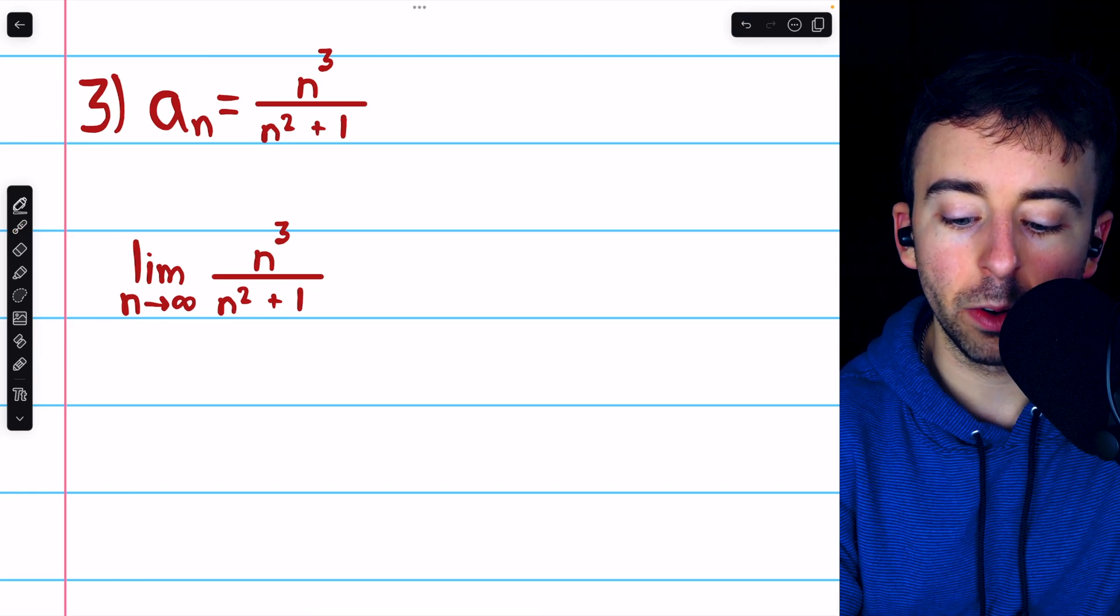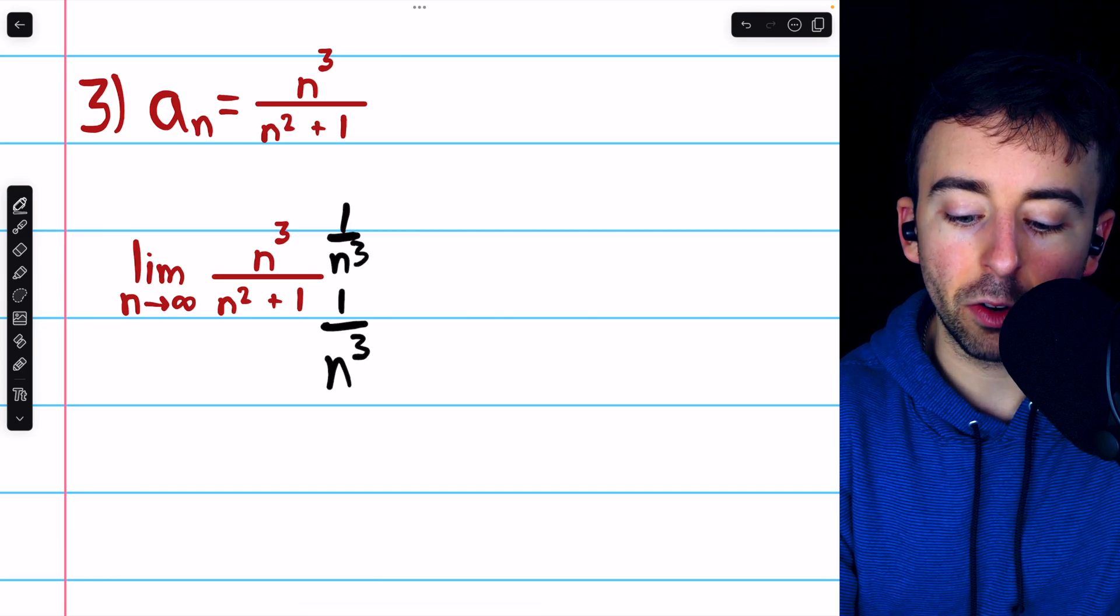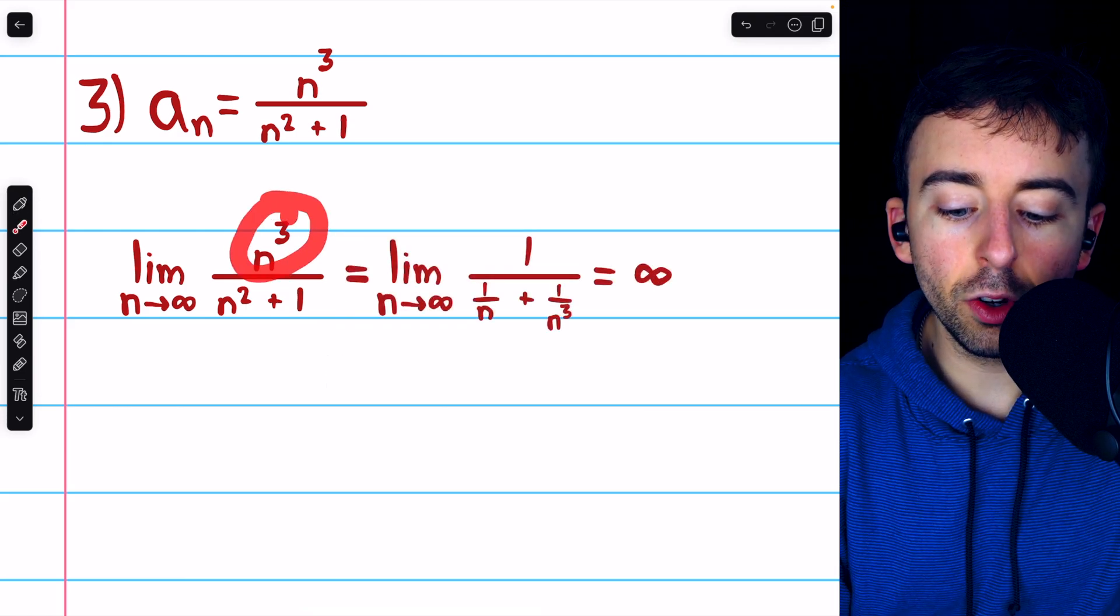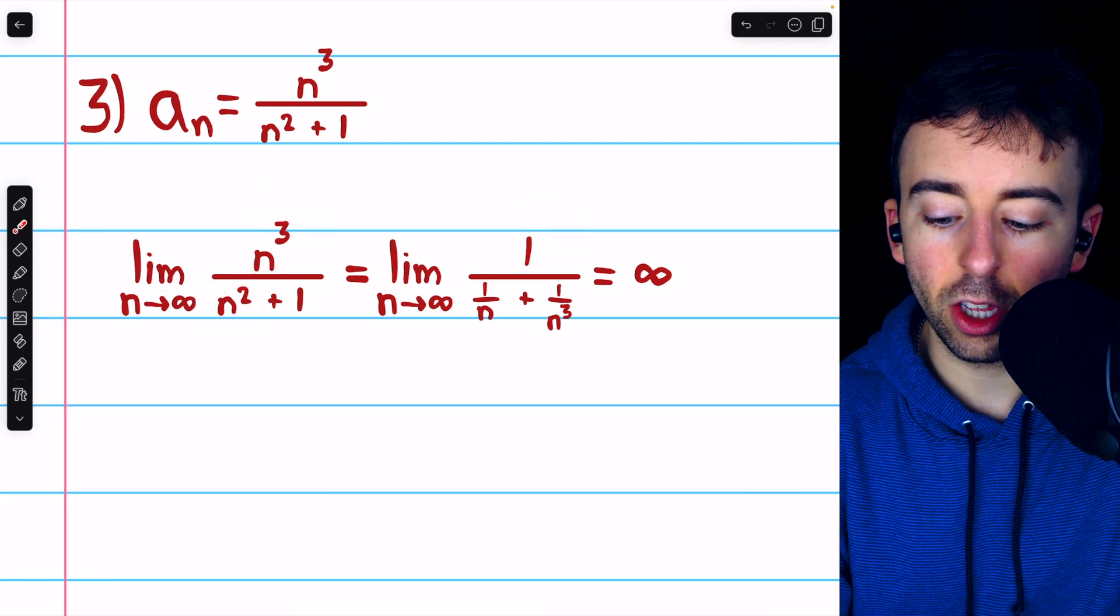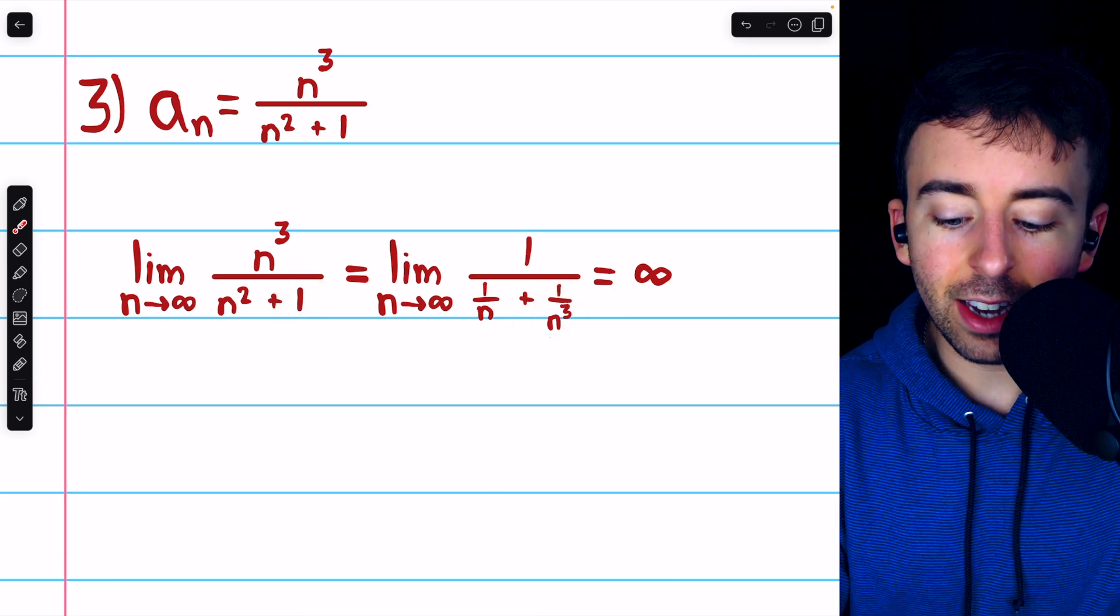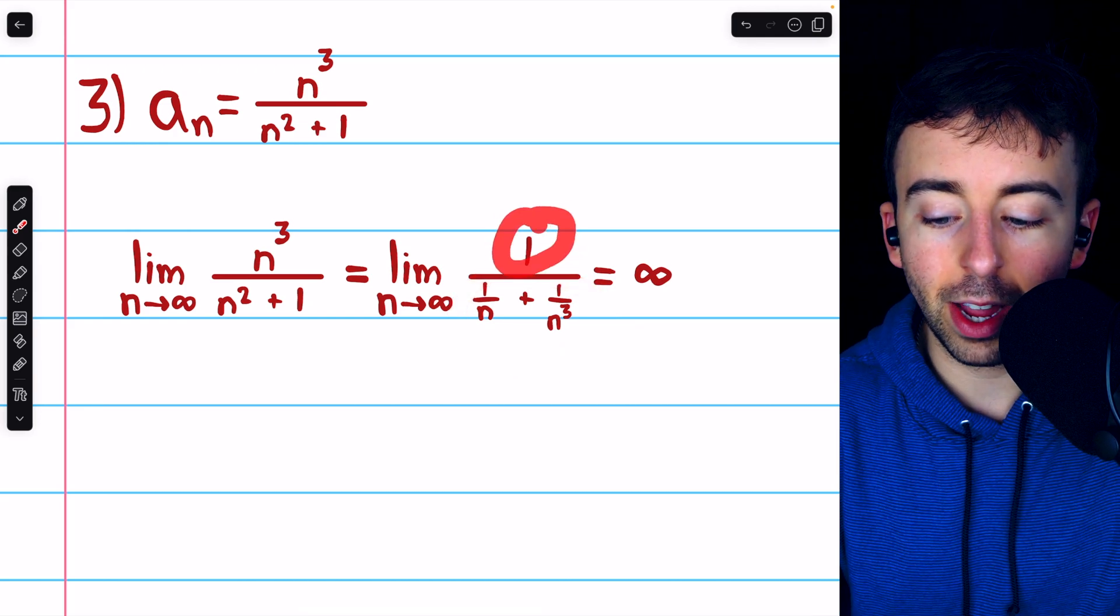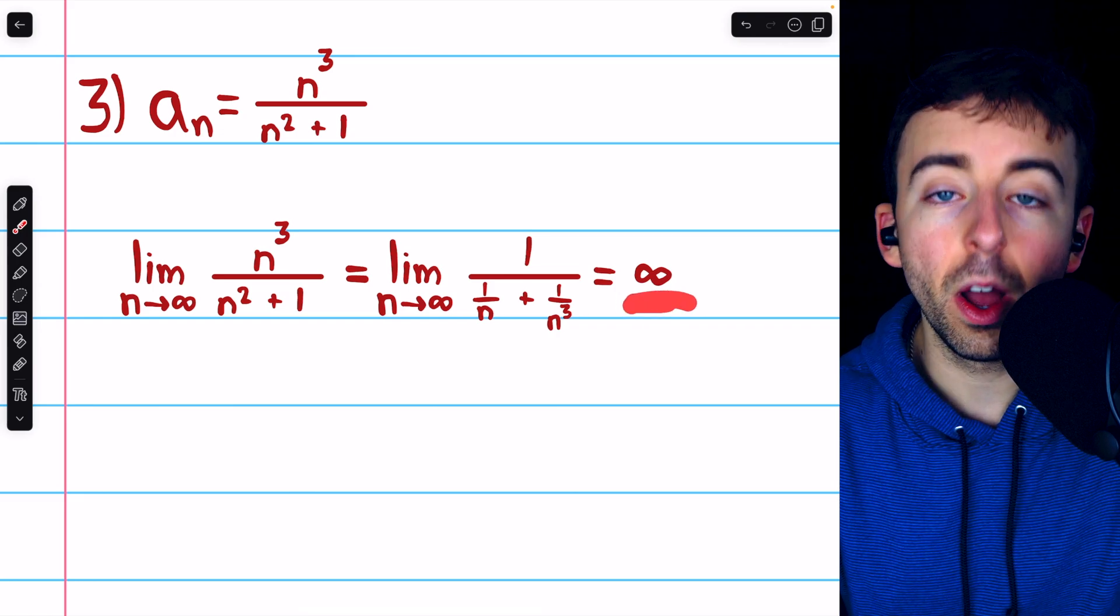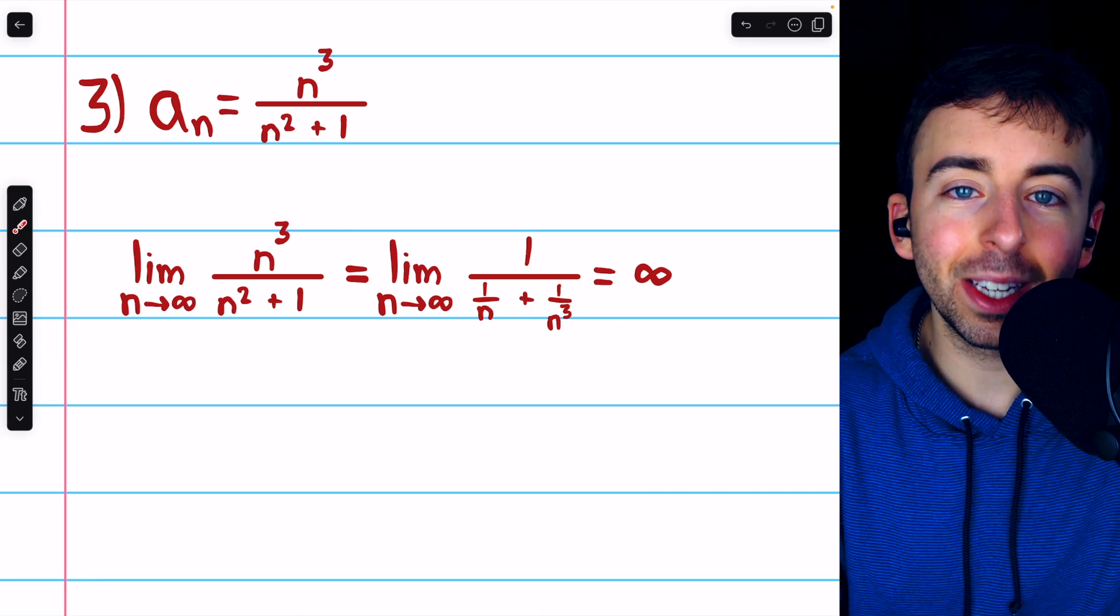However, we can see that in a little bit more simple terms if we divide by the highest power of n. So we divide the numerator by n cubed, and divide the denominator by n cubed, because that's the highest power of n present in this expression. If we do that, n cubed divided by n cubed is 1, and then in the denominator, n squared divided by n cubed is 1 over n, and 1 over n cubed is 1 over n cubed. As n goes to infinity, both terms in the denominator approach 0, while the numerator is just fixed at 1. So it's like 1 over 0. We see that's why it is going to positive infinity. There's nothing negative here, so it's going to positive infinity. The limit does not exist.